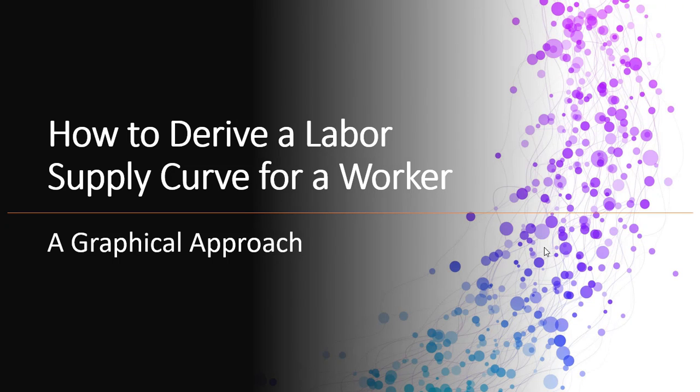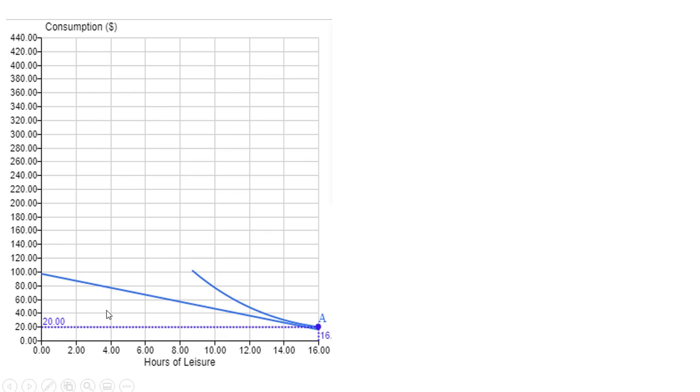In this video, we're going to look at how to derive a labor supply curve for a worker using a graphical approach. So here's our diagram. We've got consumption measured along the vertical axis in dollars and hours of leisure. We're going to assume that the person has 16 hours of leisure during the day to allocate between work and leisure because the person needs eight hours for sleep.